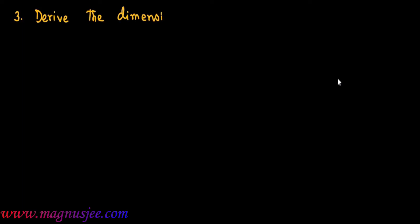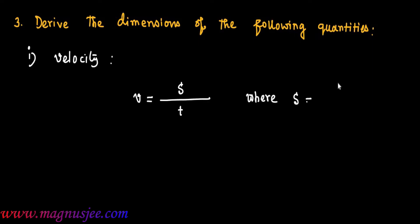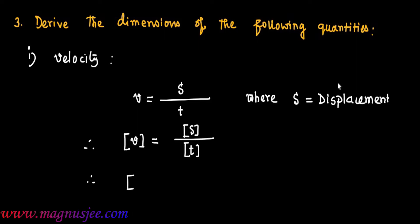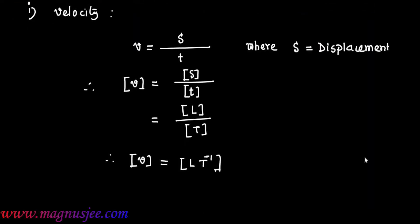Derive the dimensions of the following physical quantities. Number 1: Velocity. Velocity V is displacement by time, where S is the displacement. Therefore, dimension of V equals dimension of S divided by dimension of T, which equals dimension of L divided by dimension of T. Hence, dimension of velocity V equals L T inverse.